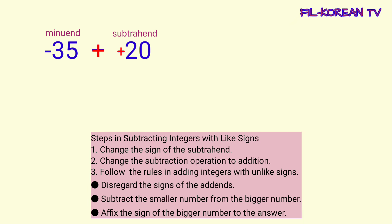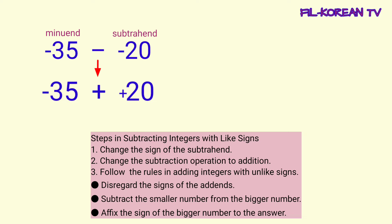So, ang isosolve natin ay negative 35 plus positive 20. Dito, i-apply natin ang rules ng pag-add ng integers na magkaiba ang signs. Sa pag-add ng integers na magkaiba ang signs, ang gagawin muna natin ay i-disregard natin yung signs — ibig sabihin, hindi na natin papansinin ang signs.